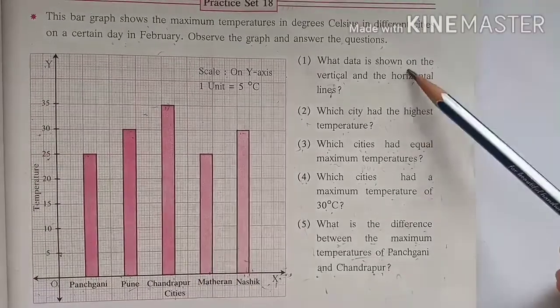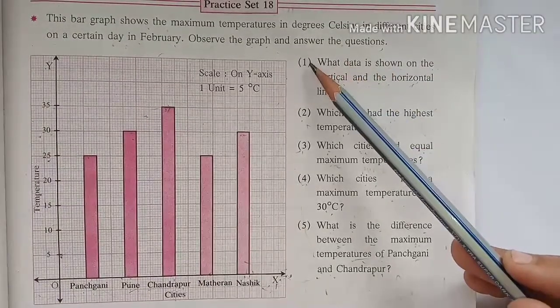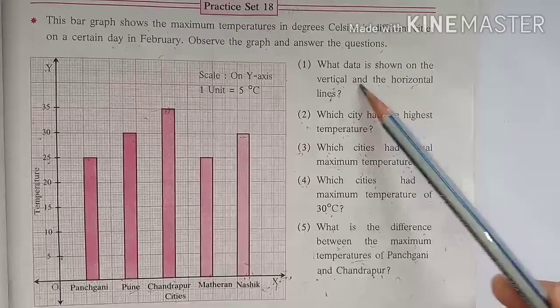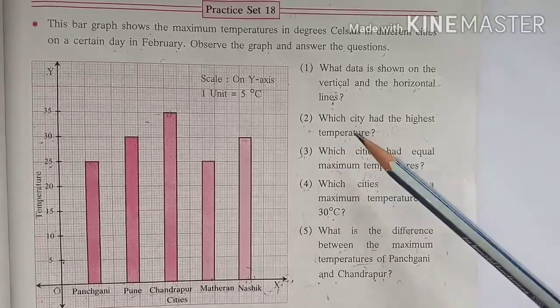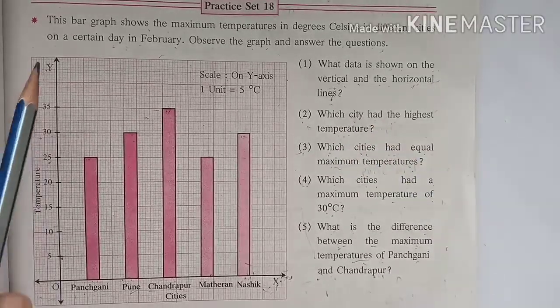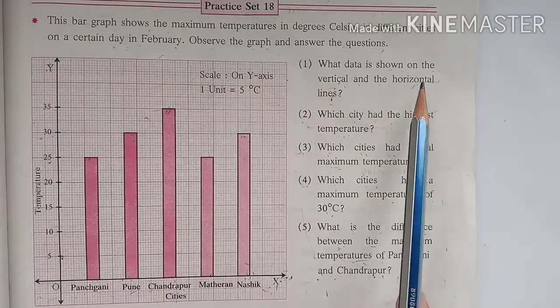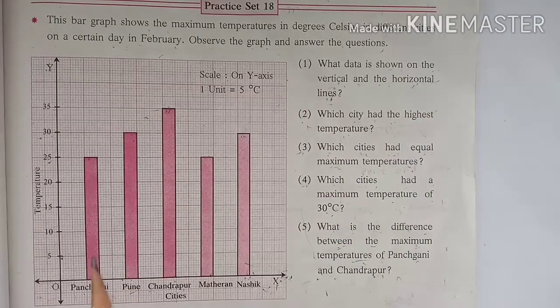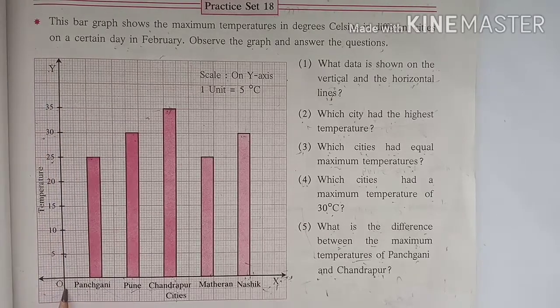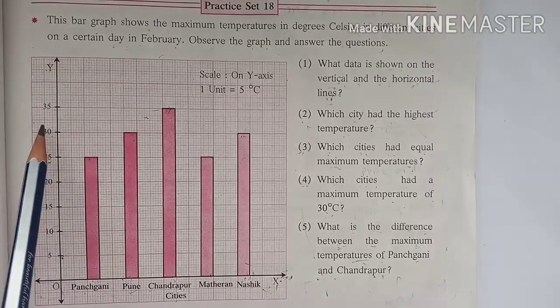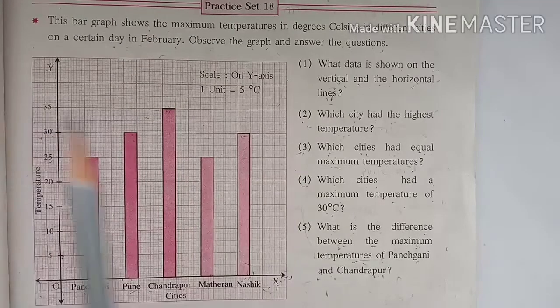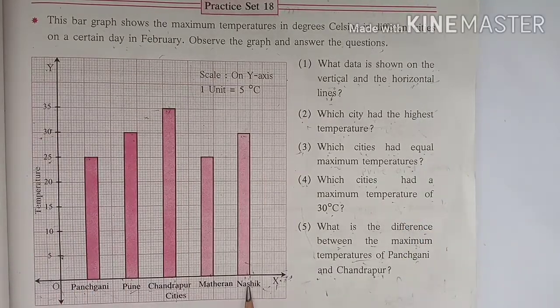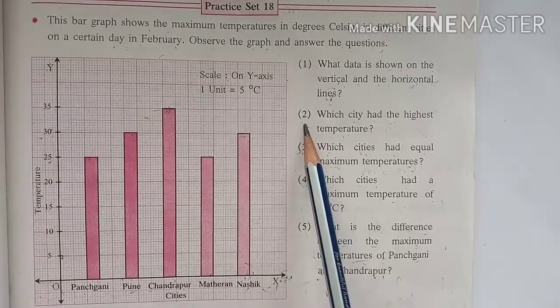First question: what data is shown on the vertical and the horizontal lines? We know vertical line means y-axis and horizontal line means x-axis. On the vertical line, temperature of the cities are given, and on the horizontal line, names of the cities are given.